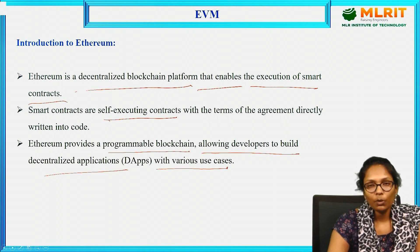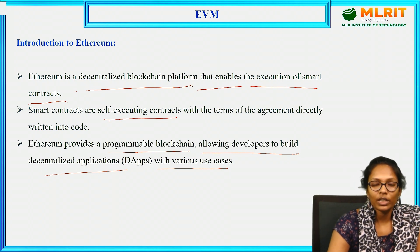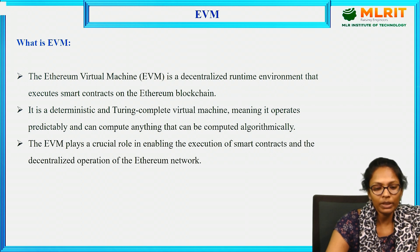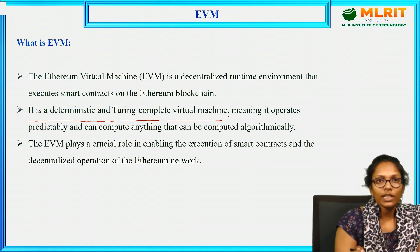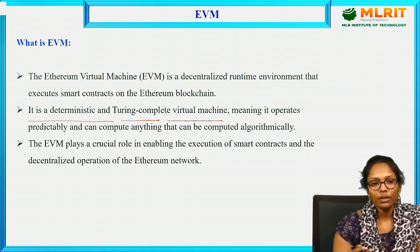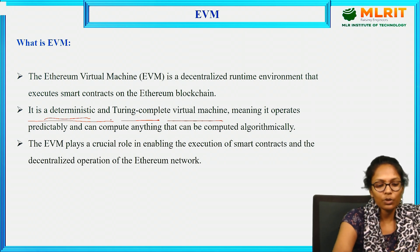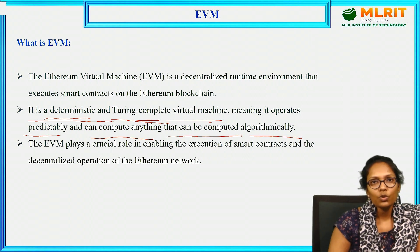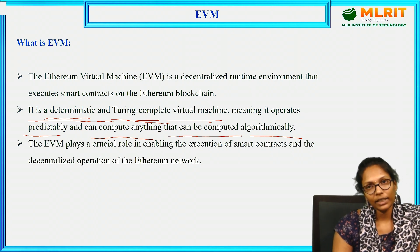In the blockchain, we have different blocks, and within those blocks we have some code. That code will be executed on the Ethereum platform. EVM stands for Ethereum Virtual Machine — it is a runtime environment where smart contracts are executed. It is a deterministic and Turing-complete virtual machine, meaning it operates predictably and can compute anything that can be computed algorithmically. Whatever you define theoretically or algorithmically can also be done practically using the EVM.